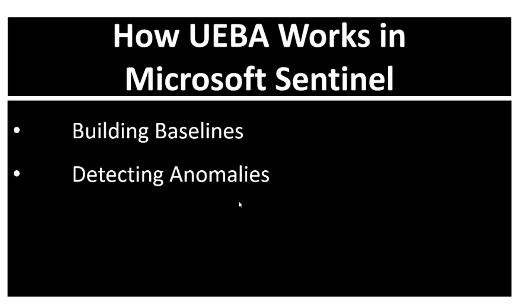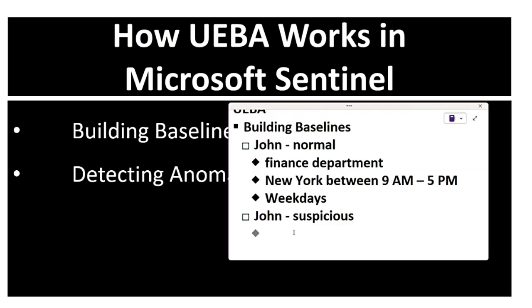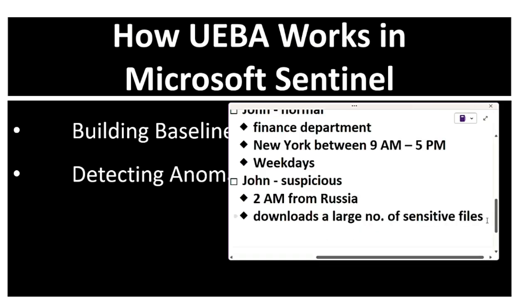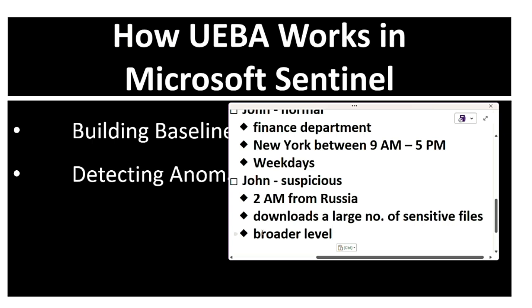Next is detecting anomalies - it identifies deviations from normal behavior using machine learning techniques. Suppose John suddenly logs in at 2 AM from Russia and downloads a large number of sensitive files. This will be detected by UEBA. It can also detect deviations at a broader level. For example, John is a finance user, but if he suddenly starts performing IT admin tasks, that will also be detected, triggering an anomaly alert.